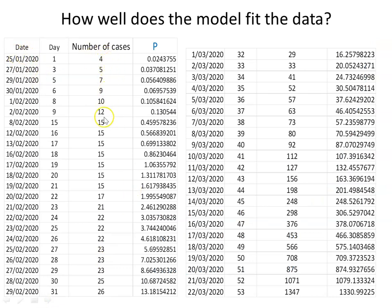Coming back to our data: the actual confirmed recorded cases are in this column, and the numbers predicted by the mathematical model are over here. In the early days the model is not very good — on day one there were four cases, but the model reads near zero. From the 8th of February through to the 19th of February, there were still only 15 cases — possibly due to lack of testing, mild symptoms, or lack of awareness.